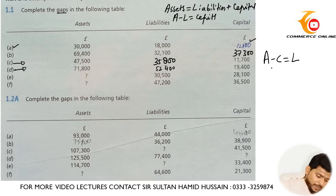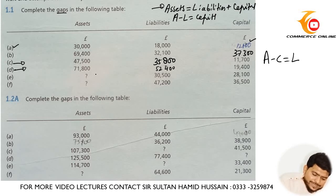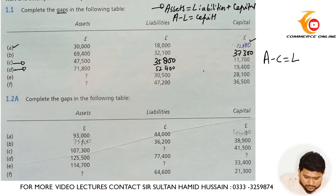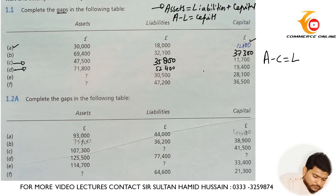As you know, the basic accounting equation is Assets = Liabilities + Capital. Here, liabilities and capital are given, so you need to find out assets. You need to add liabilities and capital to get assets: 28,100 plus 30,500 gives you 58,600.